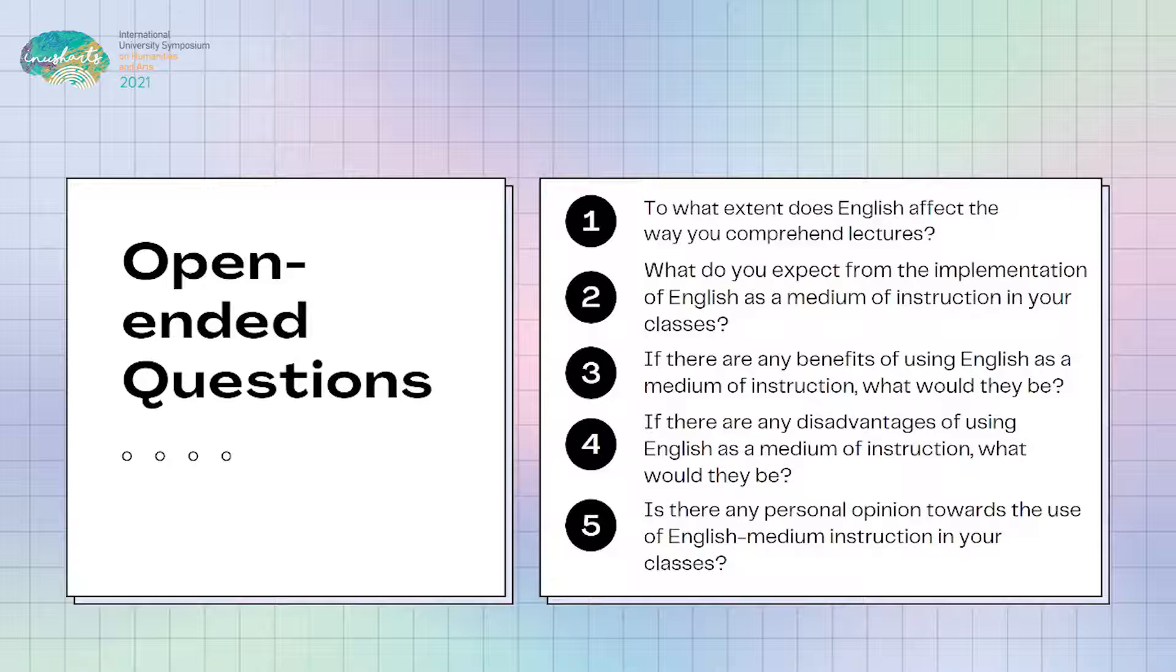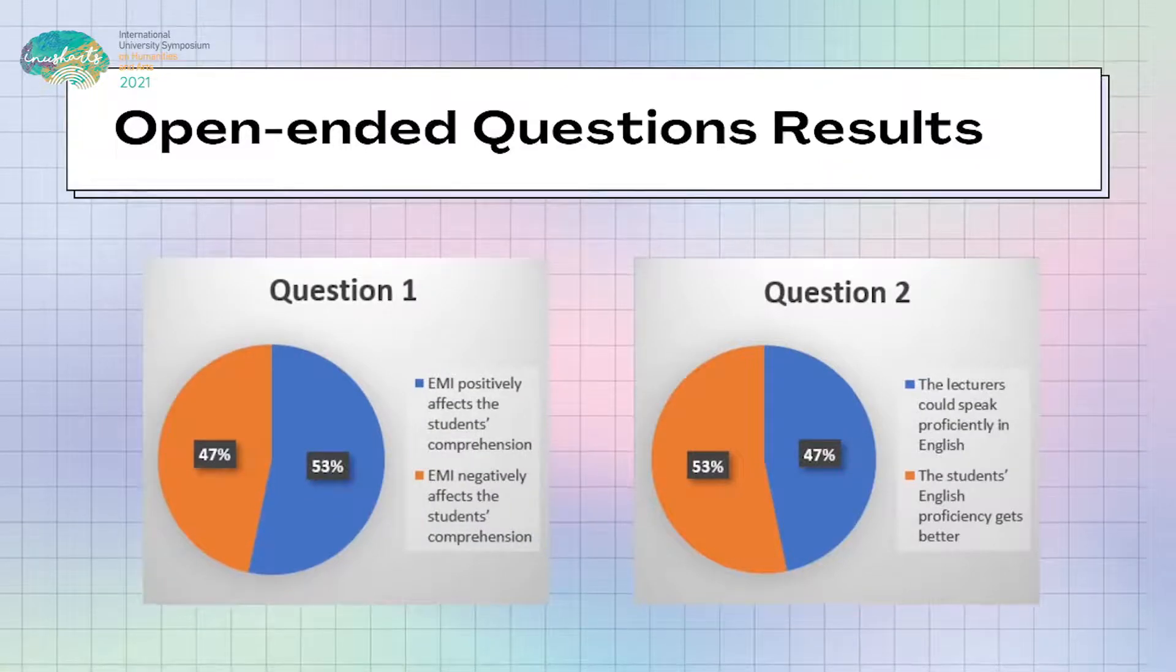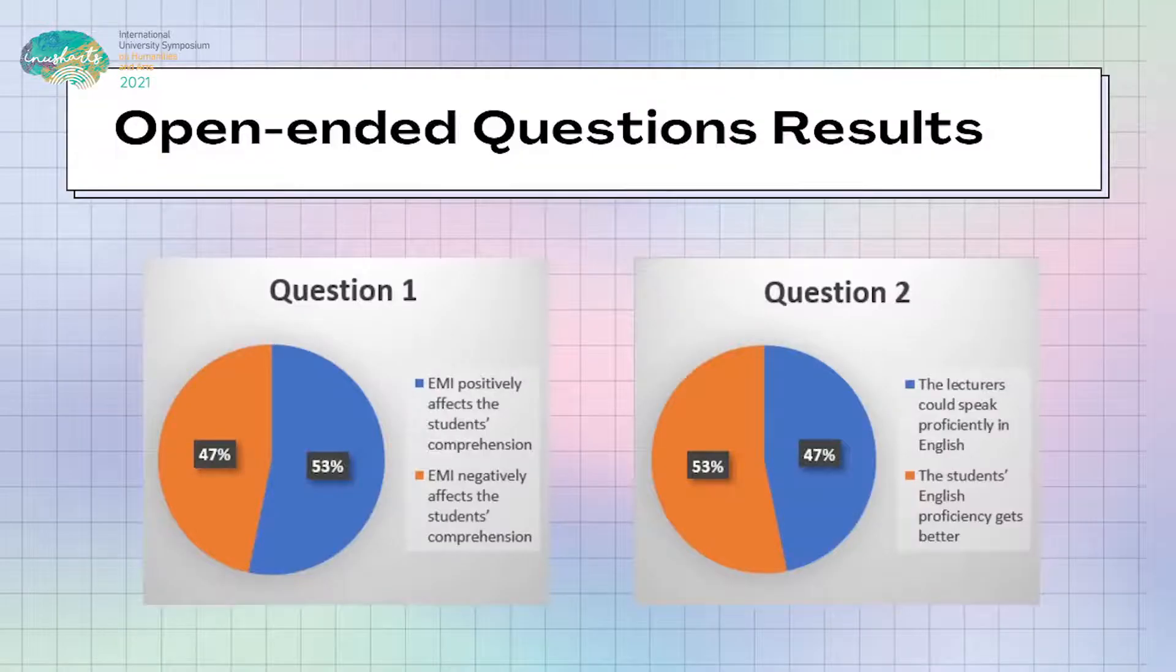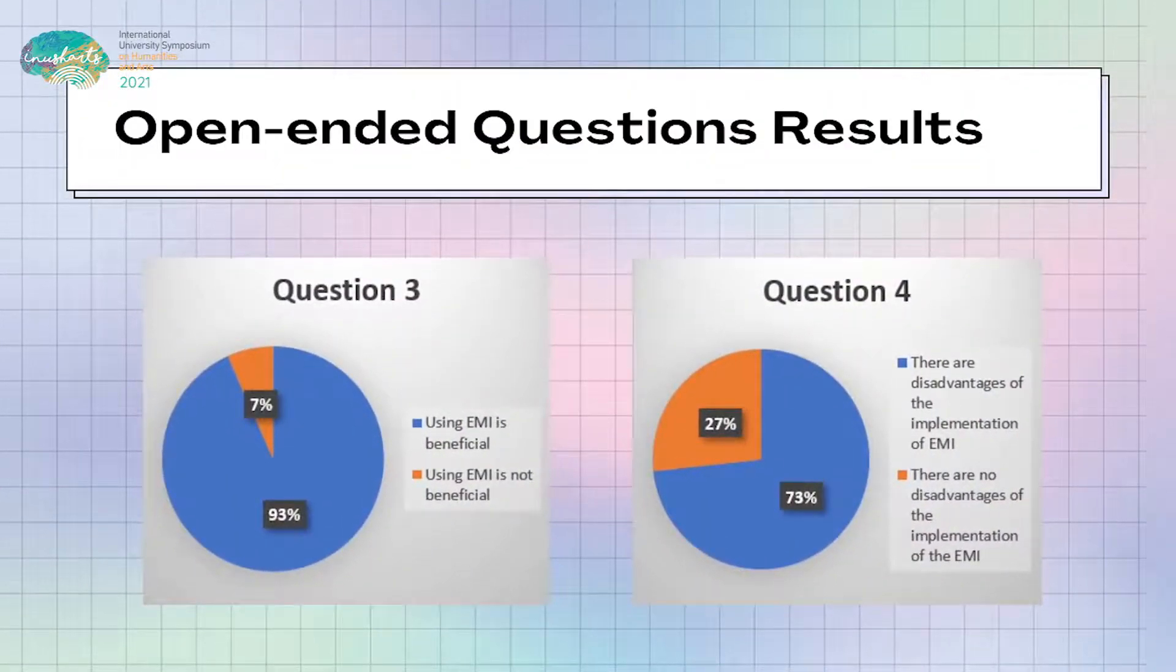The respondents' answers were classified into two categories for each question as shown in the charts. In the last open-ended question, the researchers let the respondents choose if they wanted to answer or not. The purpose of this question was to obtain additional views of the respondents on the use of EMI. From the respondents gathered, it was found that there were only 12 respondents who answered the last question.